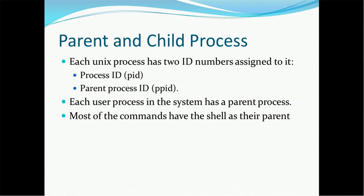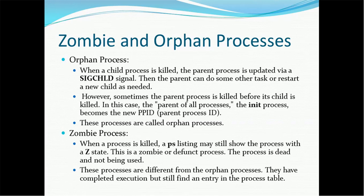Each Unix process has two IDs: a process ID (PID) and a parent process ID (PPID). Each user process in the system has a parent process. Most commands have the shell, like bash, as their parent. Regarding orphan processes: when a child process is killed, there is no impact on the parent. The parent process is updated via the SIGCHLD signal, and the parent can then do other tasks or restart a new child as needed.